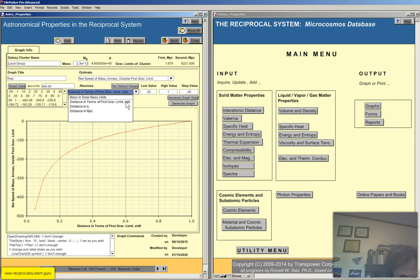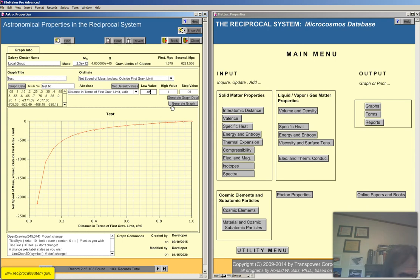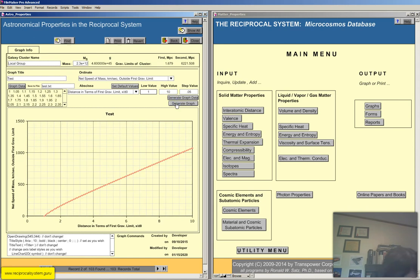Let's go to the next one, the speed of mass outside the first gravitational limit. So we need to do something different here. So obviously, it's going to be almost a linear increase outside the first gravitational limit. You have to make sure that the system makes sense relative to the ordinate.